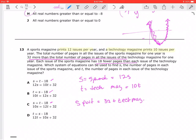Because each magazine has 18 fewer pages than the technology magazine, that means the sports magazine is equal to T minus 18. Okay, so that works. So then that's going to discount B and D.